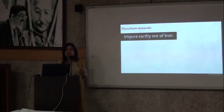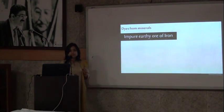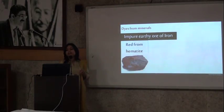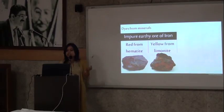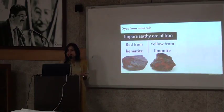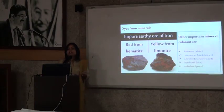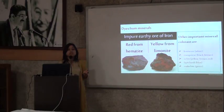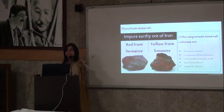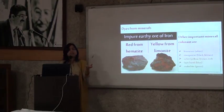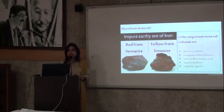We also get dyes from minerals. Hematite is one example — we get red from hematite, which is an impure earthy ore of iron. From limonite we get yellow. Limestone gives us white. Manganese gives us black and brown. Ochre gives us yellow and brown. Lapis lazuli is a gemstone which gives us a blue-colored dye. Malachite gives us green.